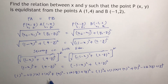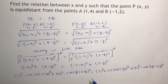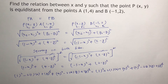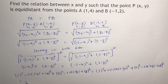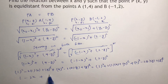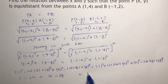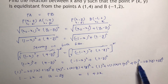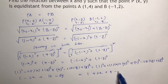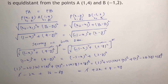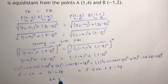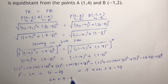Now you can cancel X square with X square, and Y square with Y square. What is left: minus 4Y, and 1 and 1 also get cancelled. So writing all remaining terms: 2X plus 4 minus 4Y.